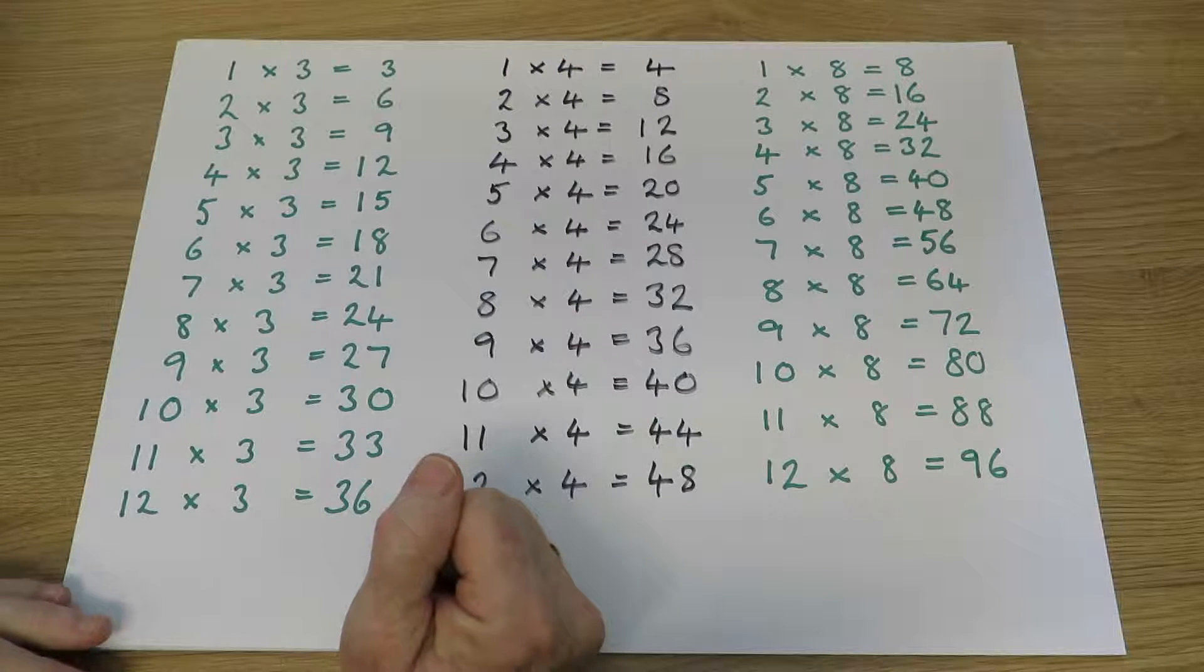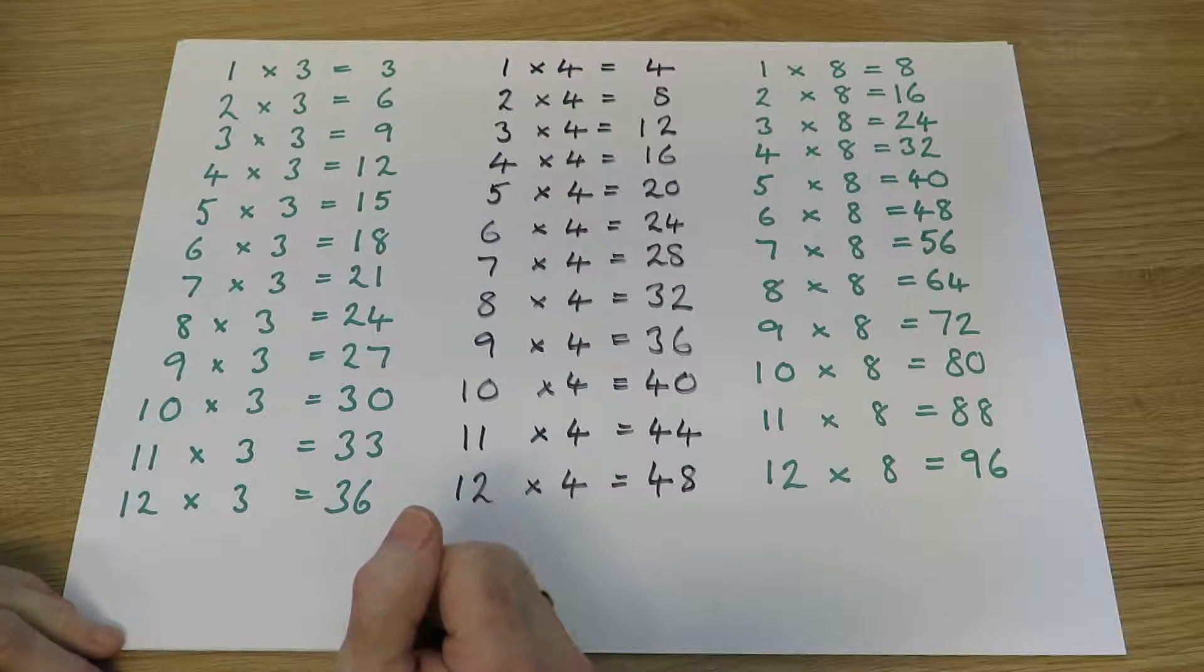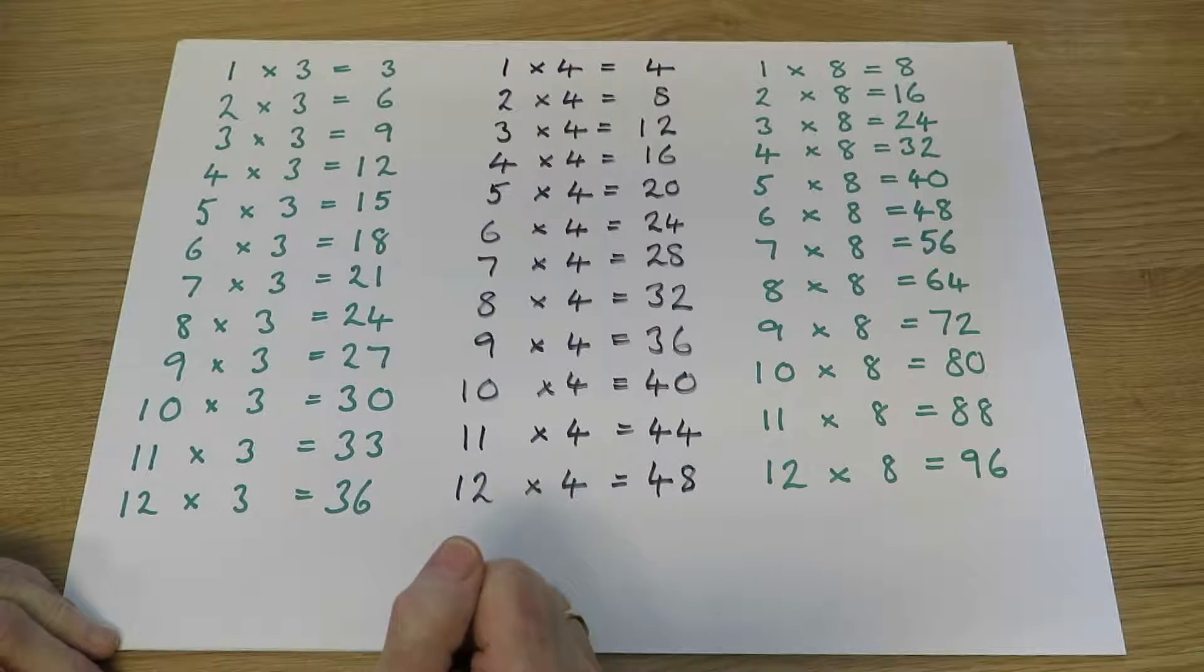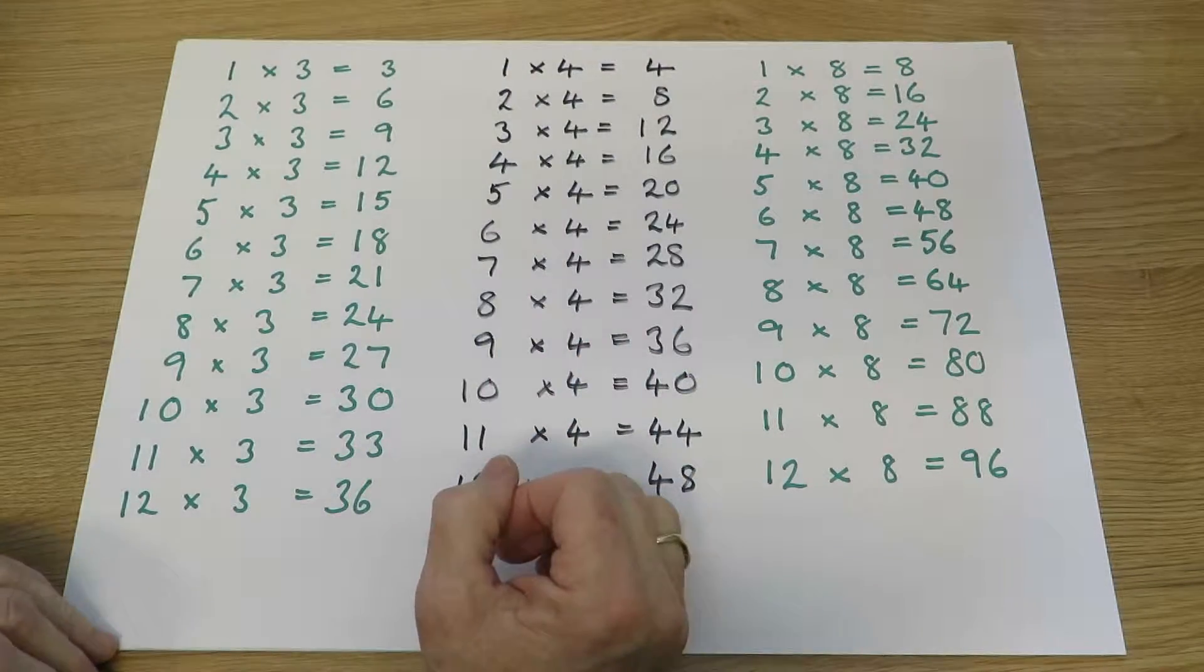Division for ages 9 to 10. The children will continue to practice all the multiplication table facts up to 12 times 12, and they will use these in their work on division.